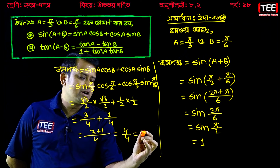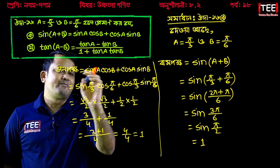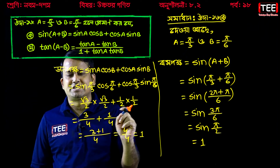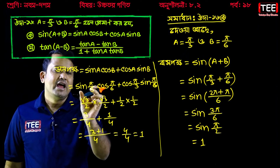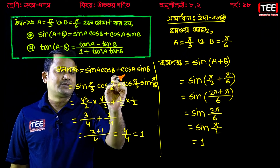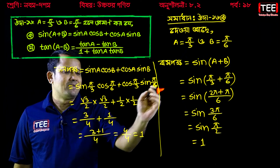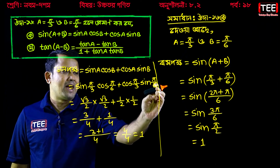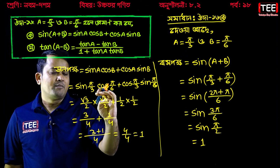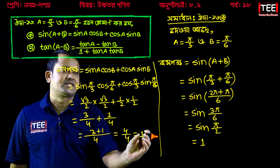Equal to 1. So we have A and B. We have to write sin(pi/3) · cos(pi/6) plus cos(pi/3) · sin(pi/6), and that equals 1.